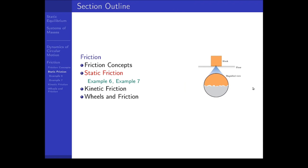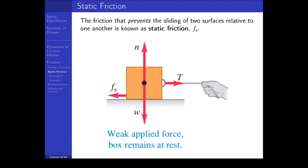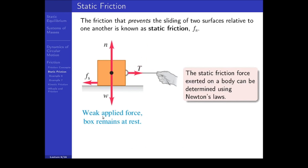Now let's talk specifically about trying to make an object move but it not being able to move because of static friction. The friction that prevents the sliding of two surfaces relative to one another is known as static friction, F sub s. Here we have a block with a weight, a normal force, and a tension force exerted by a rope. The block does not move, which means there must be an opposing force equal to that tension force — that is the static friction force. According to Newton's first law, that must be equal to the tension force; otherwise, the block would be accelerating.